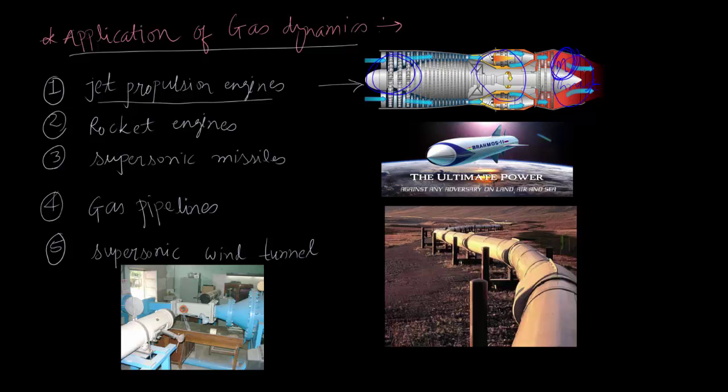The second example is rocket engines. The rocket engines are similar to jet propulsion engines, except that in rocket engines...